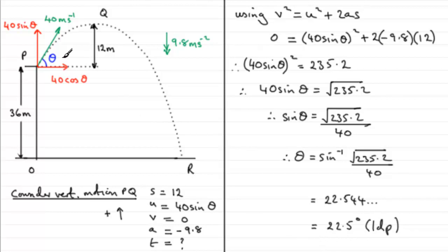Okay, so that gives you some idea how we can get this angle theta just by considering that vertical motion. Make sure you set up your positive sense and stick to it throughout.